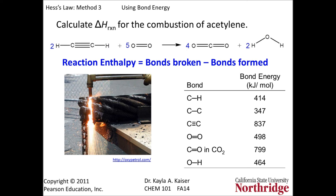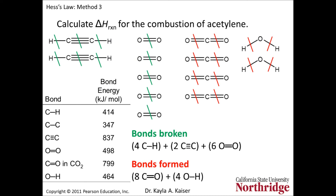When using the third approach to Hess's law, it is convenient to draw structural formulas for all reactants and products using lines to represent bonds. You can then draw a line through each bond while tallying up the number and type of bonds broken and formed. A common mistake is that students try to use stoichiometric coefficients as a multiplier instead of the actual number of bonds.